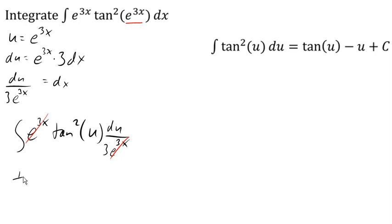I can pull the extra 1/3 out in front, and I've got 1/3 integral of tangent squared u du. At this point, I can utilize my table entry.